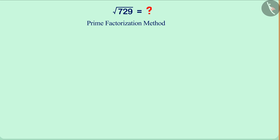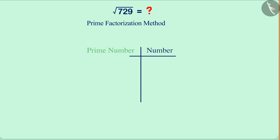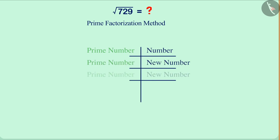As per the name of this method, we can guess that we have to do the prime factorization of the number. In this method, we divide the number by prime numbers until we get a prime number or 1.